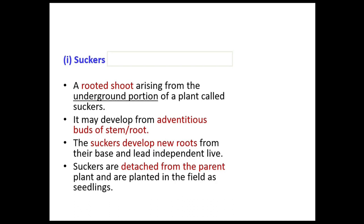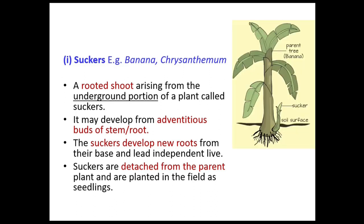A sucker is a rooted shoot arising from the underground portion of a plant. It may develop from adventitious buds of the stem or buds of the root. Suckers develop new roots from their base and lead an independent life. Once detached from the parent plant, they can be planted in the field as seedlings. Examples are banana and chrysanthemum.